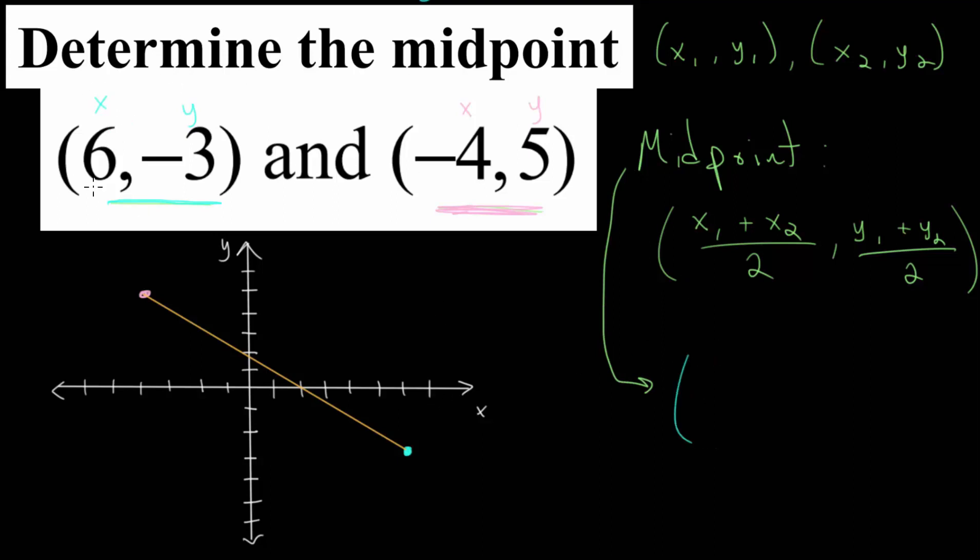We have the x-value of this first point, which is 6, and we will add that to the x-value of our second point, which is negative 4. We'll divide that by 2. And for the y-values, we take the y-value of our first point, minus 3, we add it to the y-value of our second point. We divide that by 2 to, again, find its average.